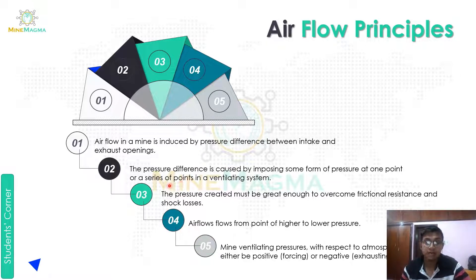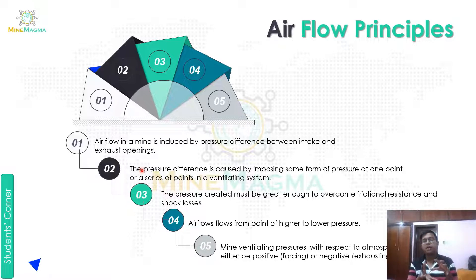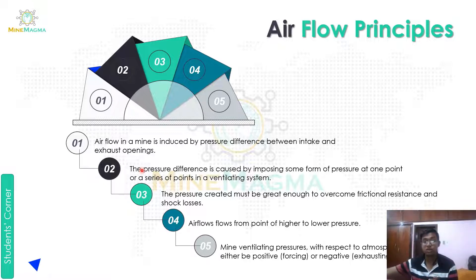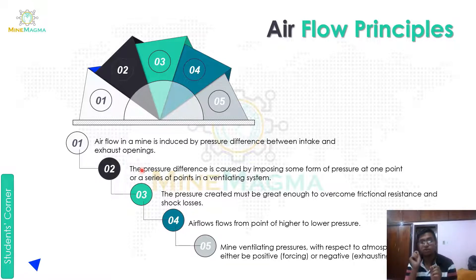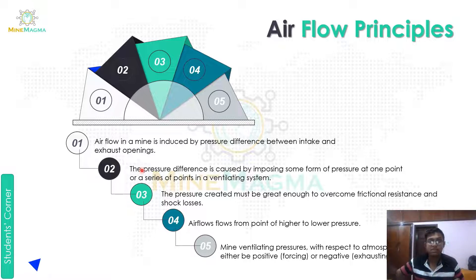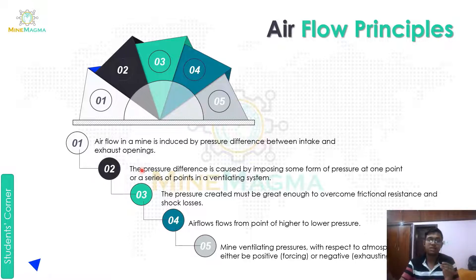Second principle: the pressure difference is caused by imposing some form of pressure at one point or a series of points in a ventilating system. Ek jagah pe high pressure create karne ke liye zyada amount of air pressure provide karni padti hai. Pressure difference hona chahiye tabhi airflow hoga. Iske liye hum fans ya kuch form of pressure ek jagah pe lagate hain, ya phir pure ventilation system mein alag-alag points pe lagate hain, taaki air pressure continuously maintain rahe aur airflow continues bana rahe.